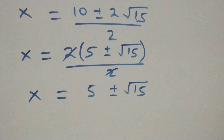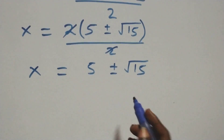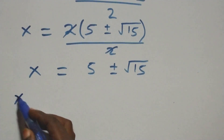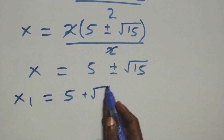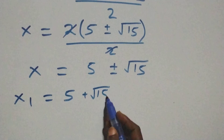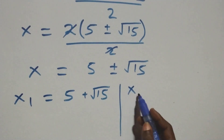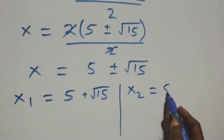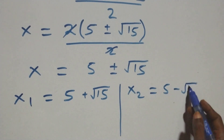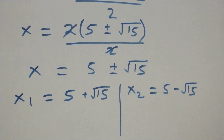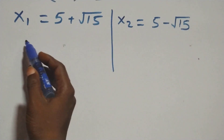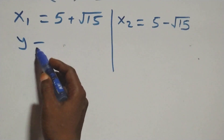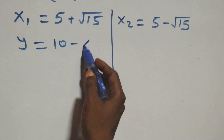We have two possible values of x. The first is x one equals to five plus root fifteen, and the second is x two equals to five minus root fifteen. We find the corresponding values of y using equation three, which is y equals to ten minus x.